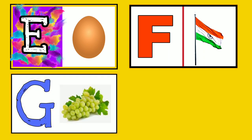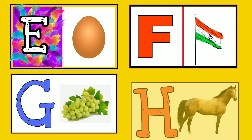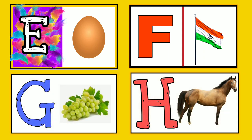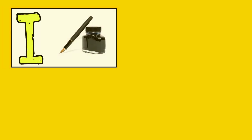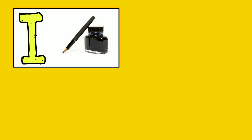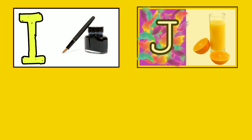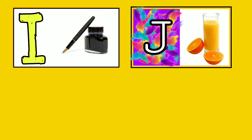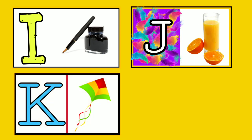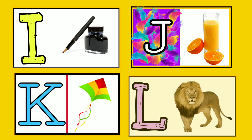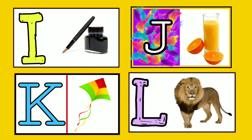G for grapes, H for horse, I for ink pot, J for juice, K for kite, L for lion.